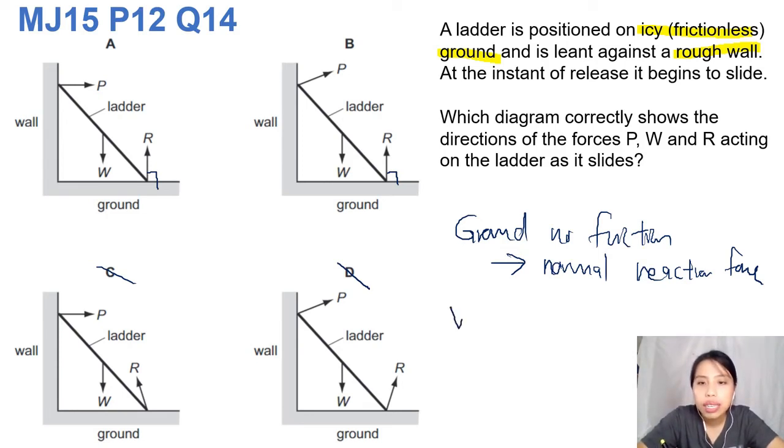How about the wall? The wall is rough. So got friction force, and also the normal reaction force, both together. And I think they combine both to form what we call force P in this case.